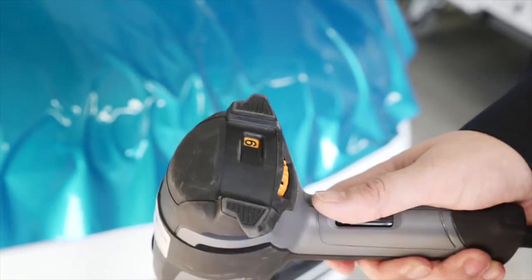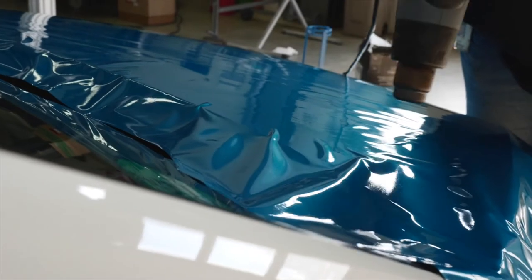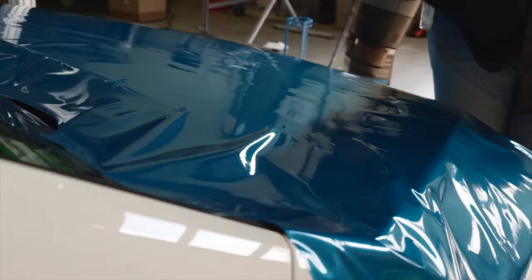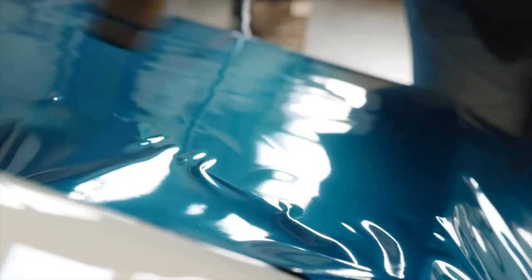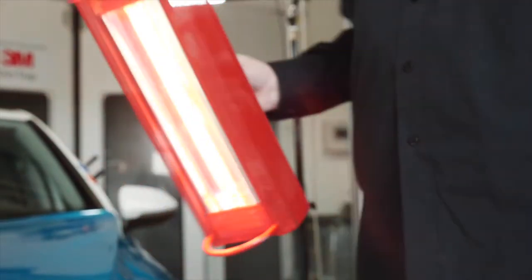Next, set the heat gun to maximum and move it quickly across the surface of the film to achieve an average temperature of between 30 and 40 degrees centigrade. As the film cools, it shrinks slightly, the wrinkles are removed and the film conforms better to the surface of the bonnet. Alternatively, use an infrared heater to speed the heating process.